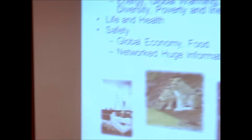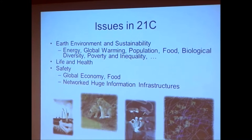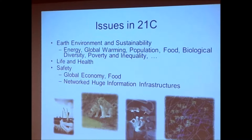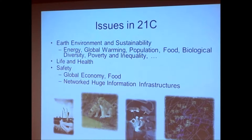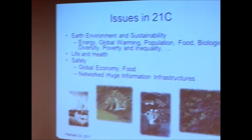Nonetheless, there are still plenty of stubborn problems that are not easily resolved. The Earth's sustainability issue is an example — it involves energy, climate, population, food, biodiversity, poverty and inequality, safety assurance, and so forth, which are mutually dependent and cannot be solved independently from the others. Another example is the issue of life and health. Although medical science has settled almost every issue, there are still diseases that only develop through the interrelations of complex factors, such as cancer, metabolic disorders, and immunodeficiency.